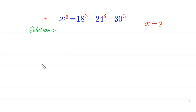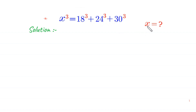Hello everyone, you are welcome to how to solve this very nice algebra equation. X cubed is equal to 18 cubed plus 24 cubed plus 30 cubed. Our job is to find all possible values of x.